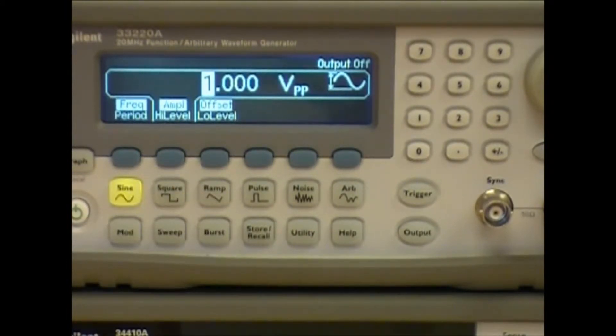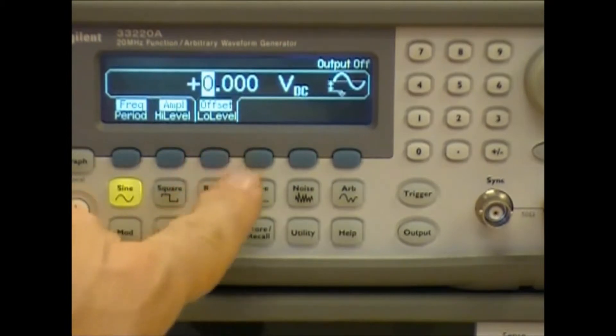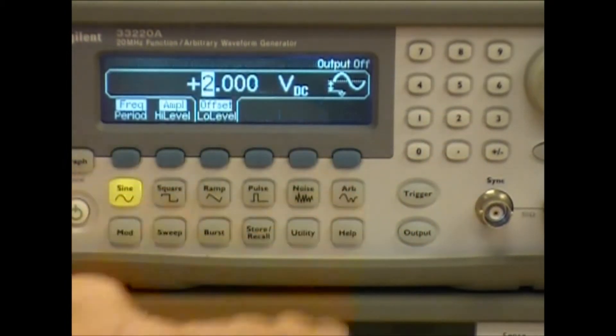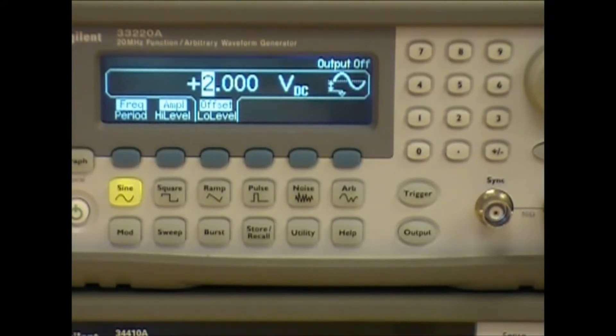And finally we want to set an offset. This is actually the DC voltage that we want to measure. So let's set that to 2 volts. Okay, now we have our function generator set up.